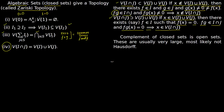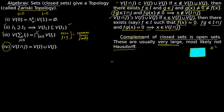These four properties together show there is a topology, and the topology is called the Zariski topology. We have seen before that the complements of closed sets — which are the open sets — are very large and most likely not Hausdorff. For example, given the plane C² and a point, the complement of that point is the entire space, so the open set is very large.